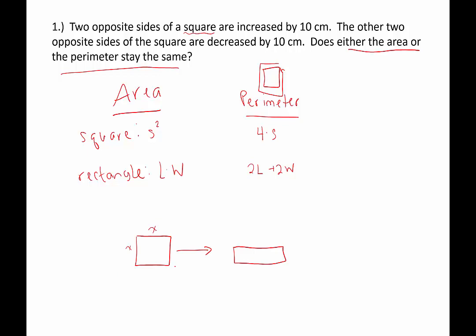So using the variable: one set of opposite sides are increased by 10, so those become x plus 10. The other two sides are decreased by 10, so they become x minus 10. Now we'll check the area and perimeter of each. The area of the square is side squared, so x squared. The perimeter is 4 times the side length, so 4x.